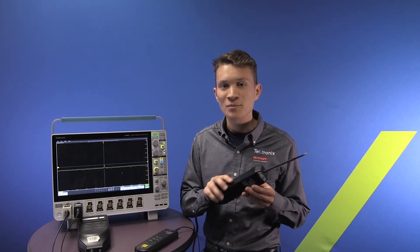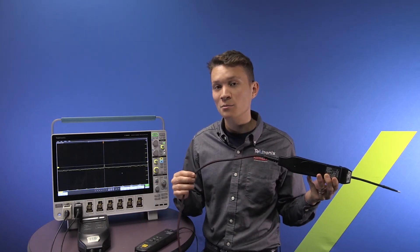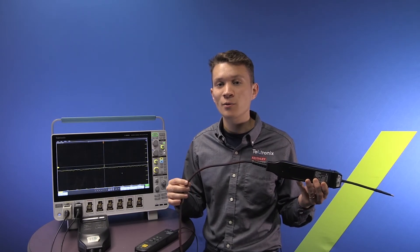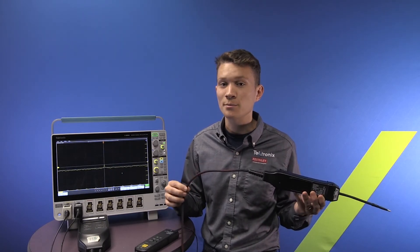To improve this design, Tektronix engineers invented an isolated probe called Isoview. It's completely powered over fiber and it also sends the analog waveform back to the scope using fiber optics.